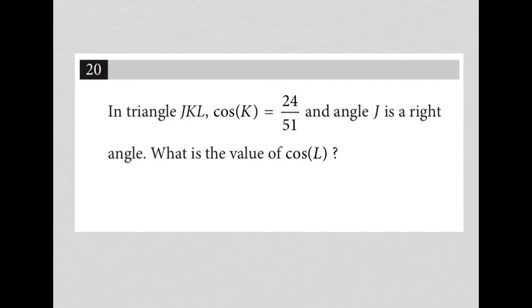So this question says, in triangle JKL, cos K equals 24 over 51, and angle J is a right angle.